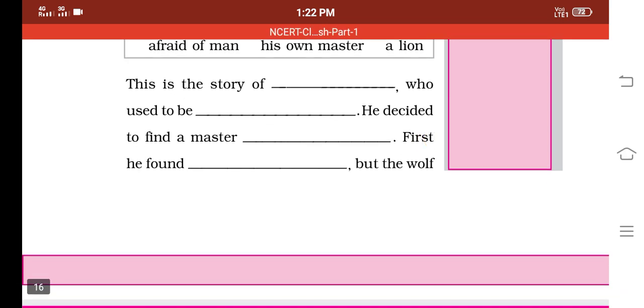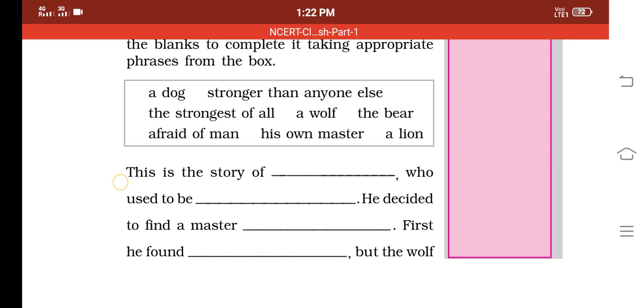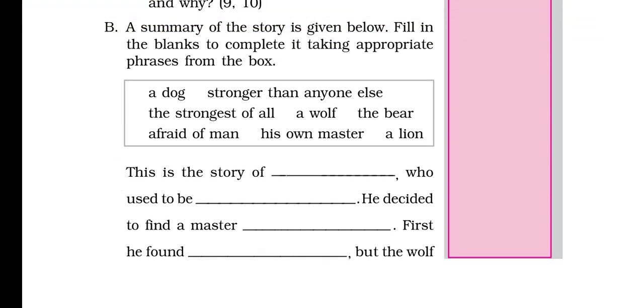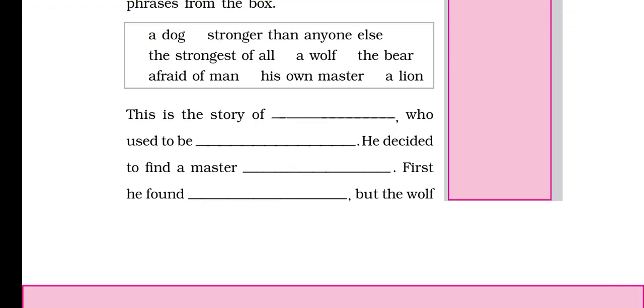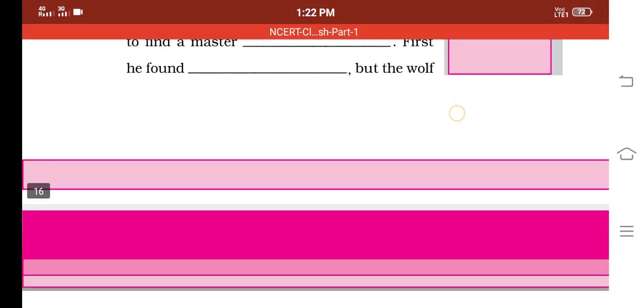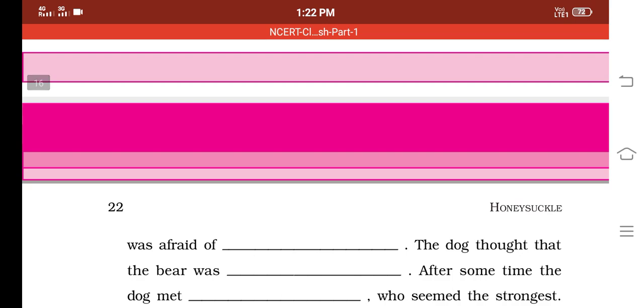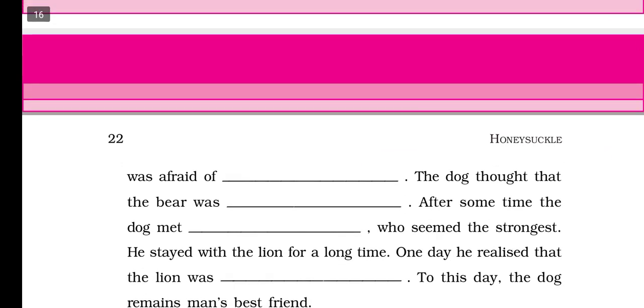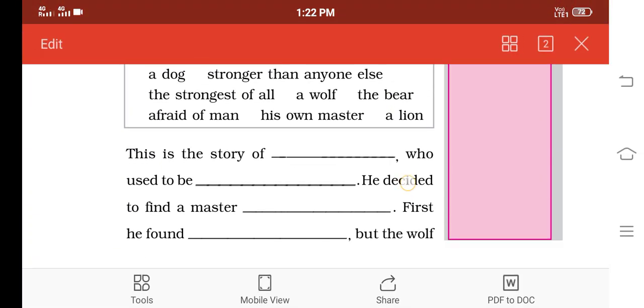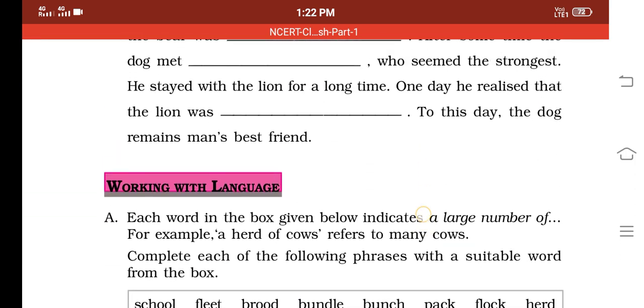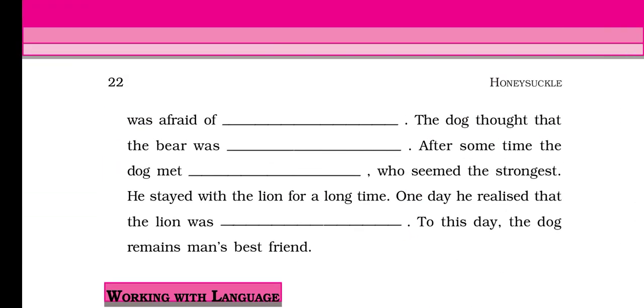First he found a wolf. You have to write there 'a wolf.' But the wolf was afraid of whom? The bear. Yes, the bear. You have to write there 'the bear.' The wolf was afraid of the bear.